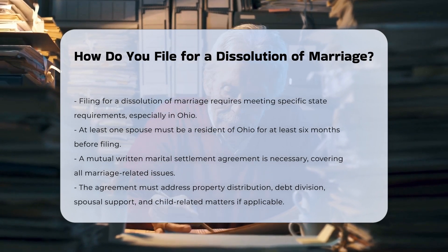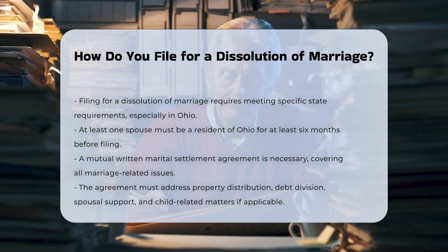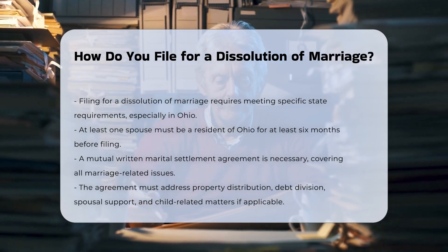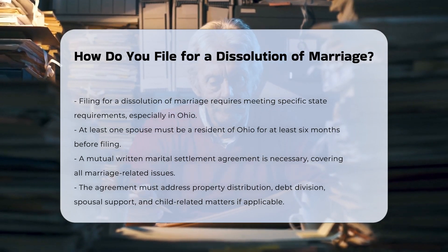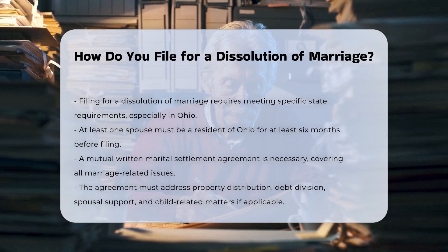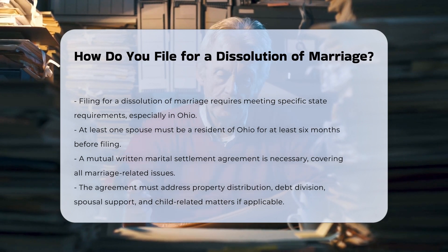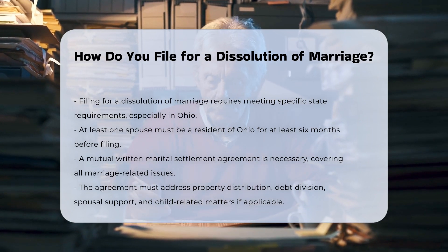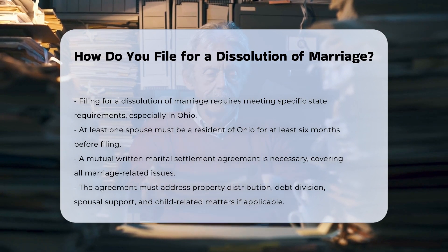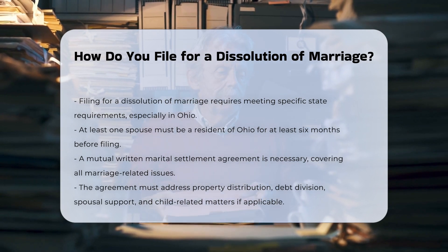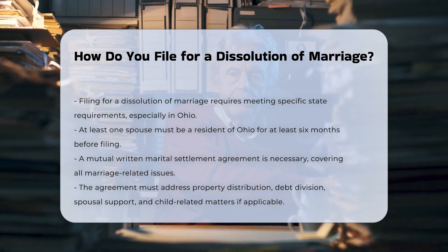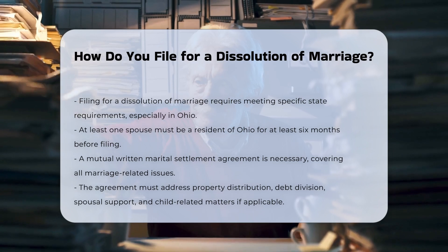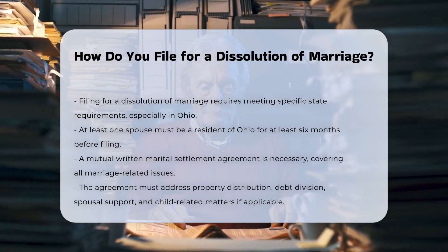Residency requirements: In Ohio, at least one spouse must have been a resident of the state for at least six months before filing the initial paperwork for a dissolution. For a dissolution to be a viable option, you and your spouse must have a written marital settlement agreement that includes provisions on all issues related to the marriage.